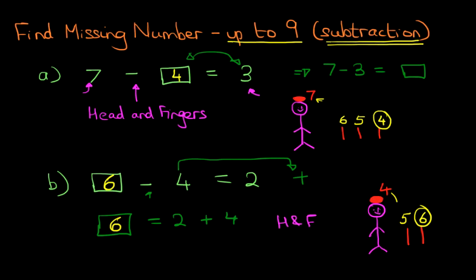So, that is how we find the missing number with numbers up to 9 for subtraction questions using the head and fingers method.